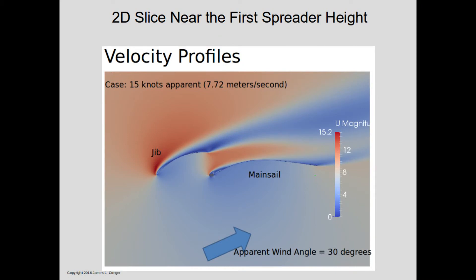This first slide shows a velocity contour of a two-dimensional slice through the sails, up about a third of the way up the rig. The colorization is based on the speed at which the air is moving. On the outside of the simulation, away from the sails, the air is moving at 15 knots at a 30-degree angle, corresponding to a close-hauled simulation. The reddish tints correspond to air which is moving faster than average, and there are two areas with significant acceleration.